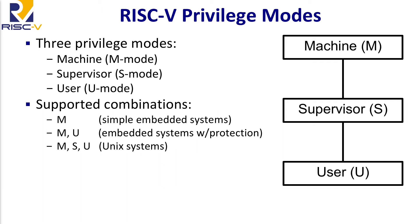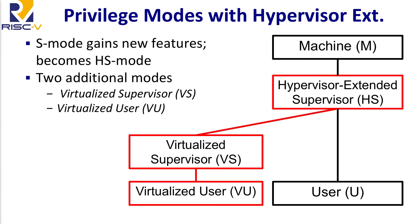The goal of the hypervisor extension is to virtualize that supervisor mode. The extension adds some additional functionality to supervisor mode so that it can act as a hypervisor. To reduce confusion, we rename it to hypervisor extended supervisor mode, or HS mode for short. To be clear, it is still just like supervisor mode — if you took an unmodified Linux binary you could run it in HS mode just fine; it would just not use the new functionality that's been added.